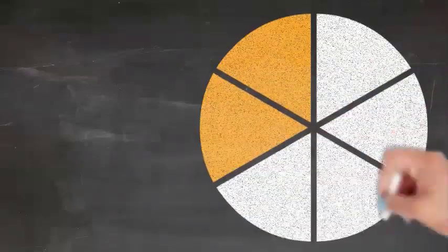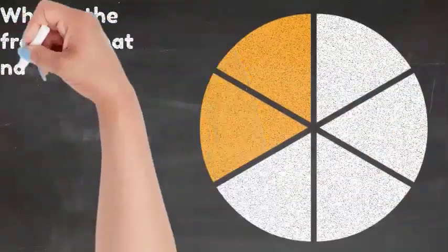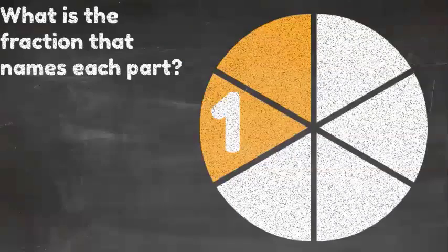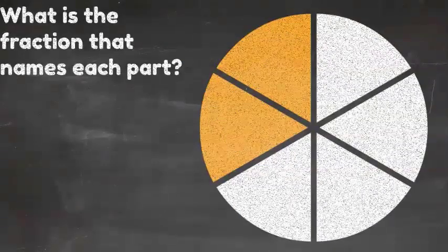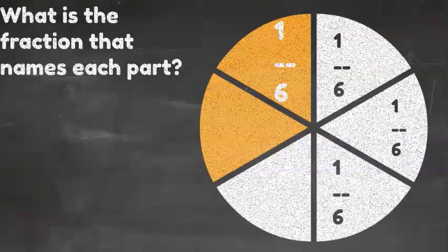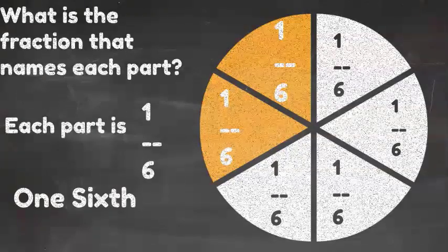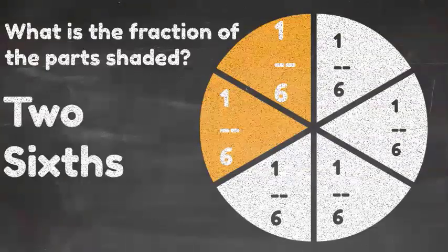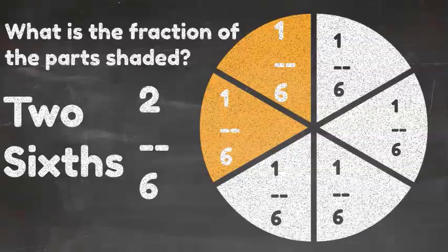Let's try this one. What is the fraction that names each part? Well, let's count all the parts. This has six equal parts, so each part is considered to be one-sixth. Each part is one-sixth. One is the numerator, six is the denominator. What is the fraction of the part that is shaded? Well, there are two that are shaded, so two-sixths is my fraction.